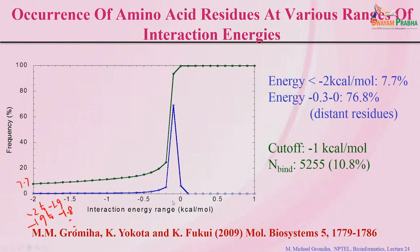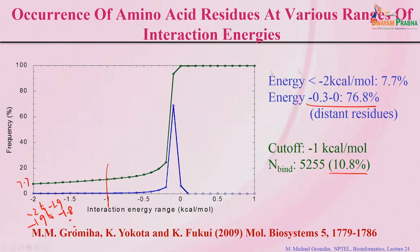If you take a cutoff of 1 kcal/mol, about 10.8 percent of residues are identified as binding site residues, which is reasonable and consistent with the literature. There is a peak around minus 0.32 with 77 percent of residues — this is because those residues are far away in the structure and are not making any contacts or interactions with each other. So about 77 percent of residues are not in contact at all.